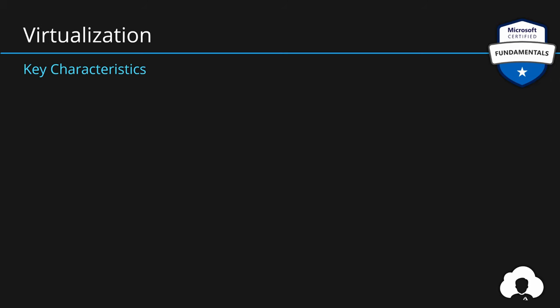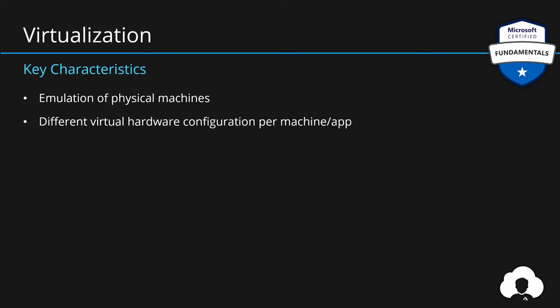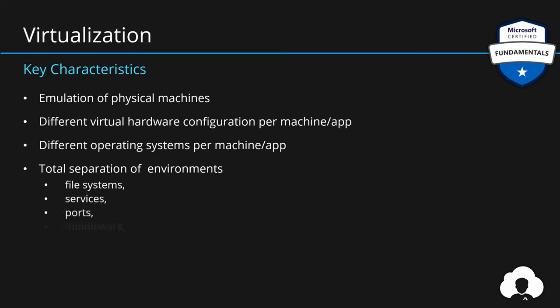Virtualization is simply emulation of physical machines. It gives you the ability to create different virtual hardware configurations per machine and per application. Additionally, you are able to install different operating systems per machine and per application. Because those are totally separate machines, each application can freely use its own file system, services, ports, and install any middleware or apply any configuration it needs to run.